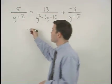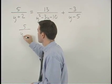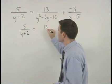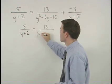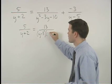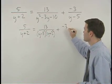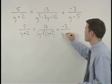So we have five over y plus two equals thirteen over y minus five times y plus two plus negative three over y minus five.